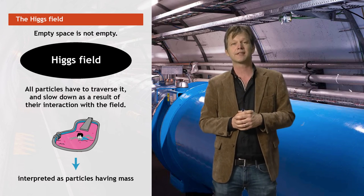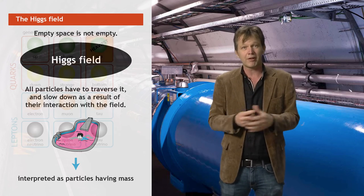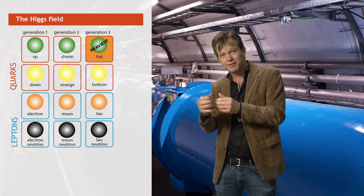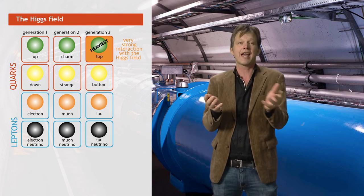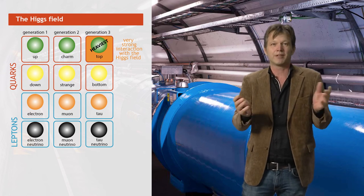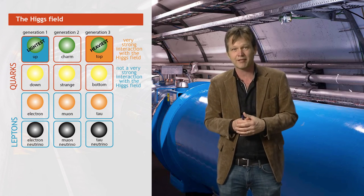So, for example, the top quark apparently has an extremely strong interaction with this Higgs field. And hence, we say it is heavy. And the up quark does not feel the Higgs background field very much. And therefore, it is light. It has a small, effective mass.